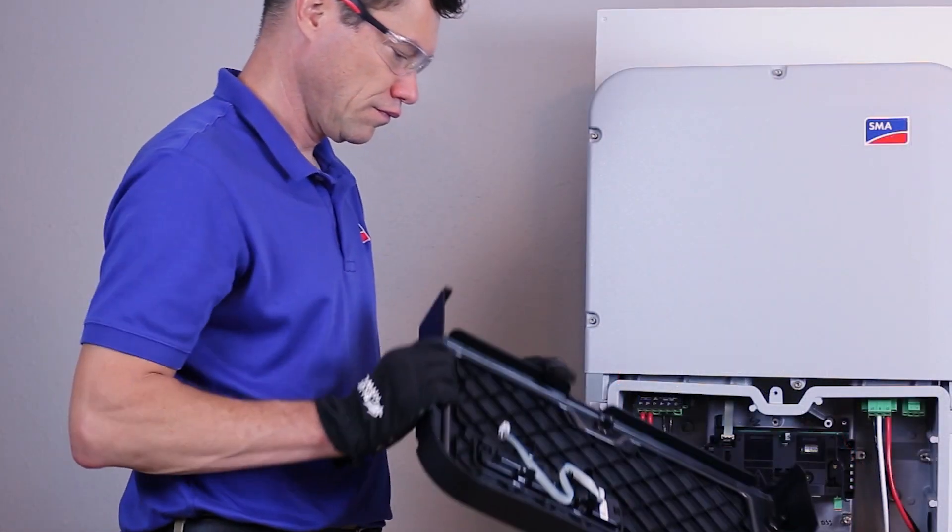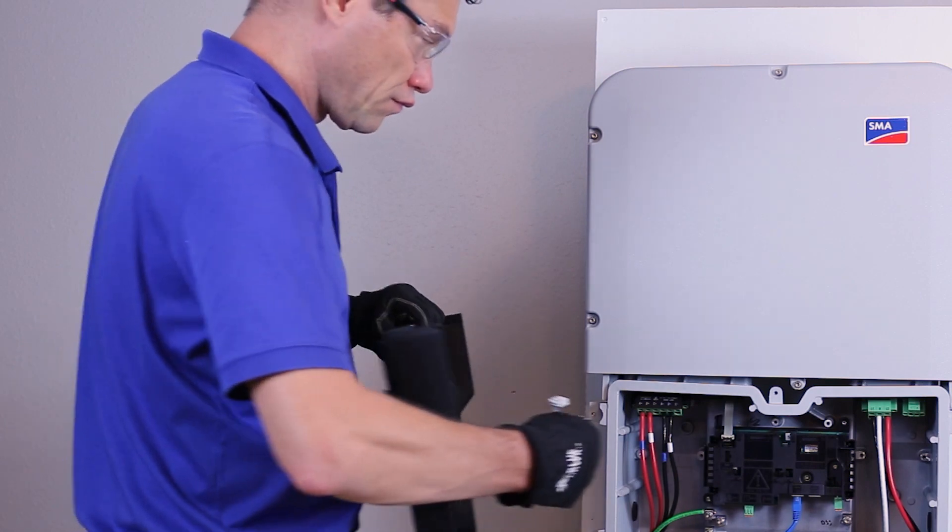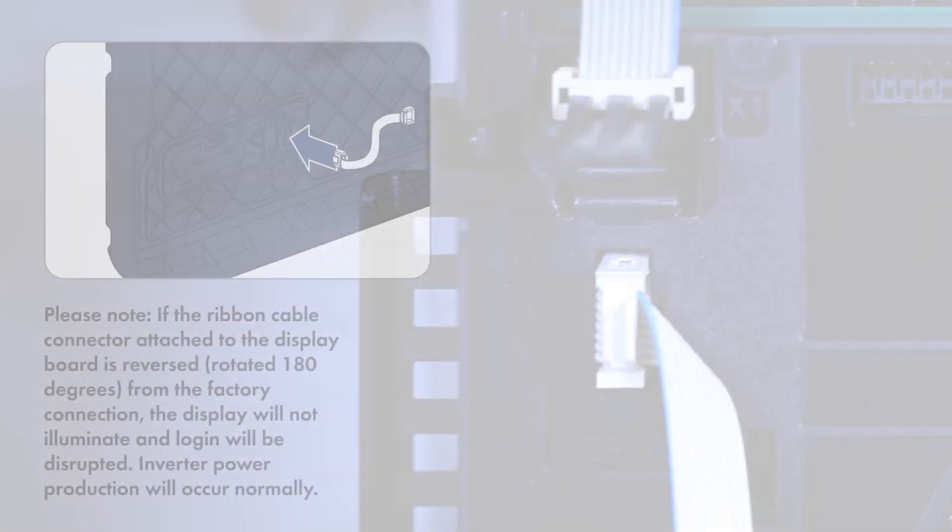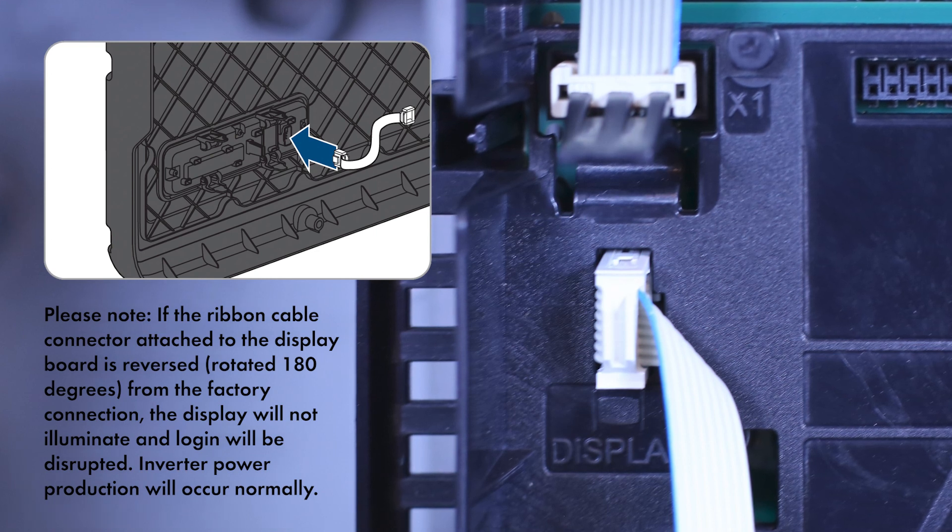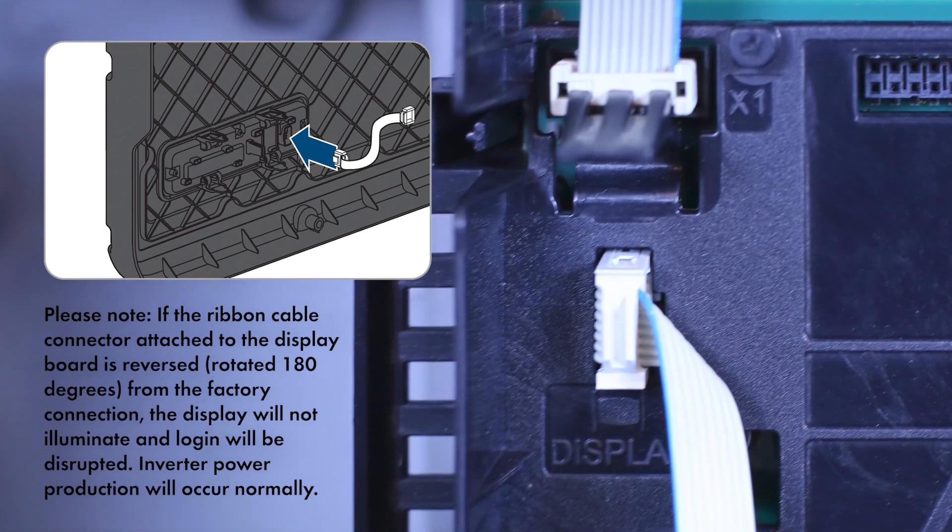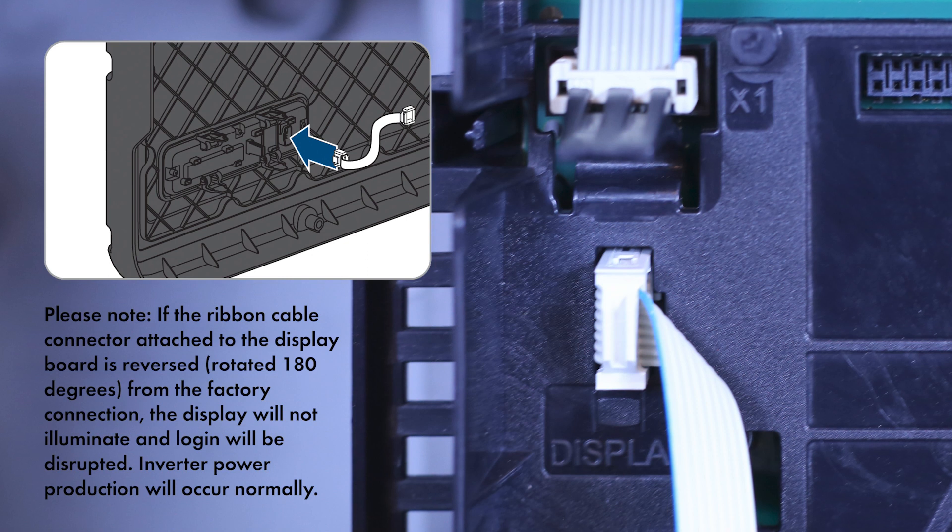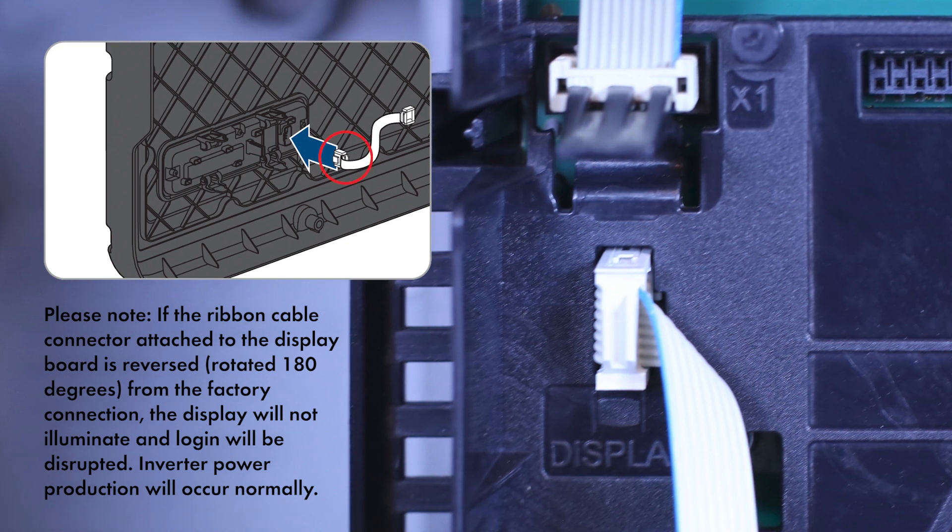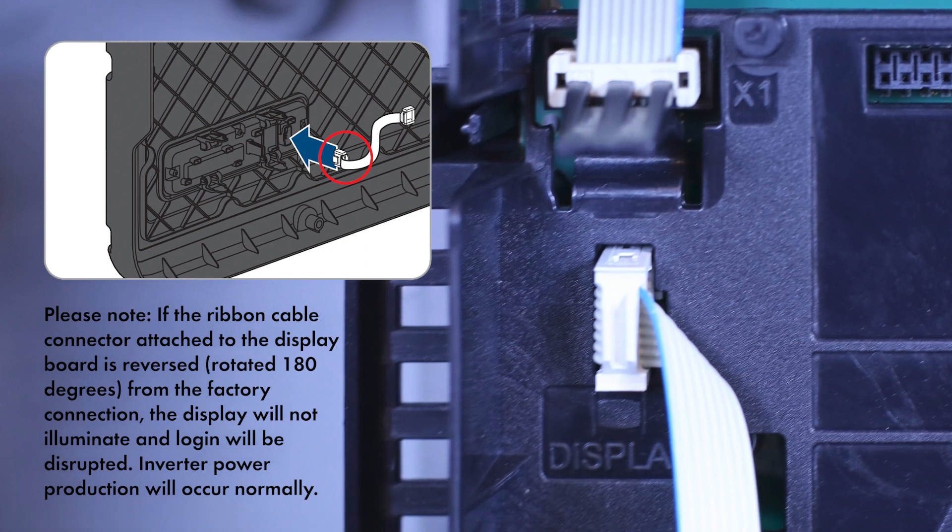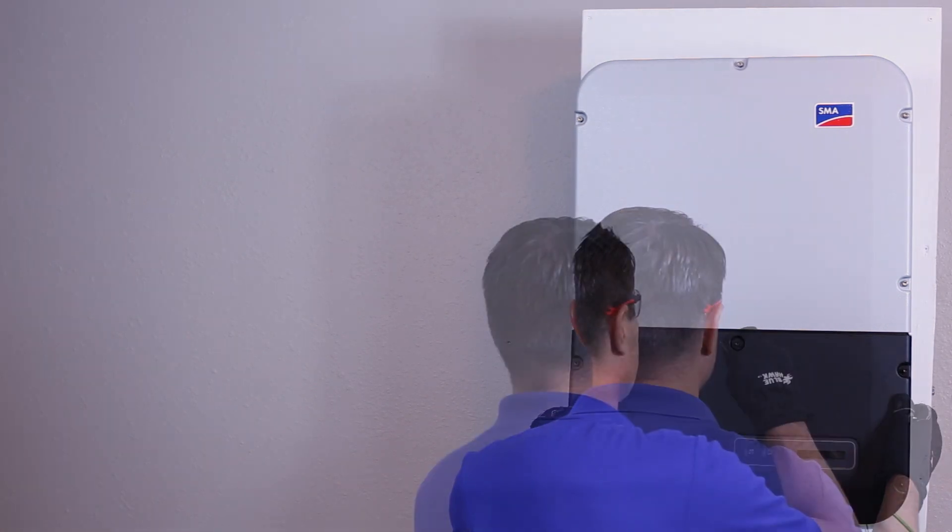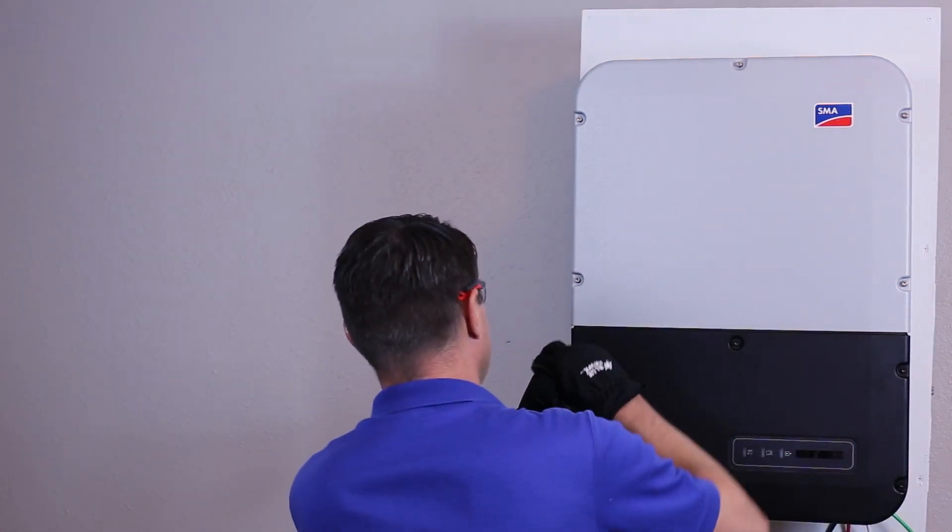When you are finished with wiring, remember to attach the display board ribbon cable to the communications board before reattaching the connection unit lid. Install the connection unit lid and tighten the six self-retaining Torx 25 screws.